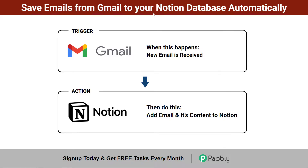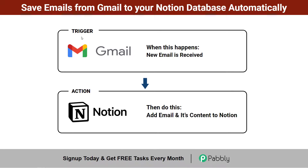In this video, I'll teach you how, whenever a new email is received in Gmail, you can automatically add that email and its content to Notion, which is an amazing project management software. Along with the email content, you can add the subject line, the incoming email address, and further details directly from Gmail. If you want to save all incoming emails to Notion, I'll show you the process step by step.